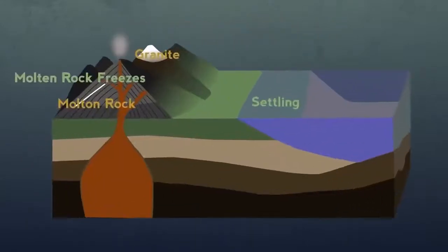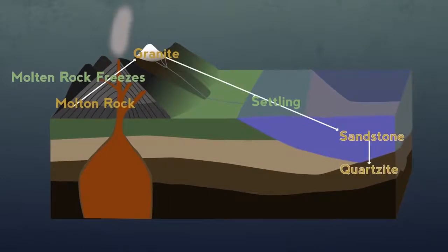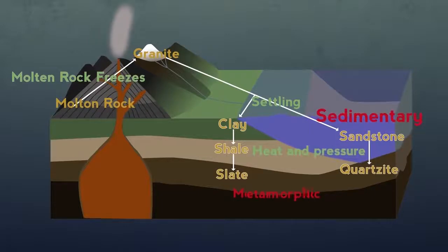From sandstone we get quartzite, and from clay we get first shale, then slate. Sedimentary and metamorphic rocks get weathered and eroded too.